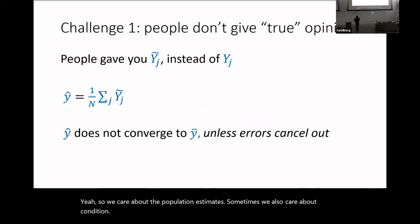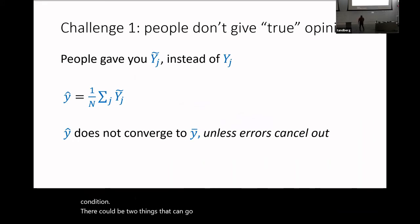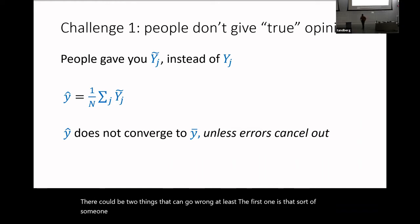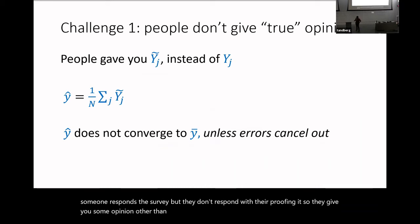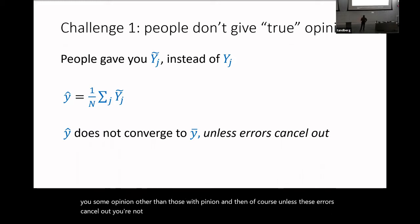Last time, we said there could be two things that can go wrong. The first is that someone responds to the survey but doesn't respond with their true opinion — they give you some opinion other than their true opinion. And then, unless these errors cancel out, you're not going to recover the mean opinion.